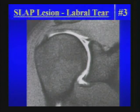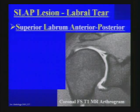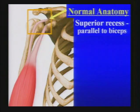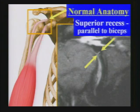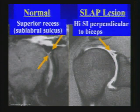Next unknown — a SLAP lesion, a type of labral tear. Specifically, a Superior Labrum Anterior to Posterior tear. These tears affect the superior labrum and extend anterior and posterior to the biceps anchor. It's helpful to know the normal anatomy: there can be a superior recess normally that runs parallel to the long axis of the biceps tendon long head as it attaches to the superior aspect of the glenoid. With a SLAP lesion, we see high signal intensity that is exactly perpendicular to that normal orientation.